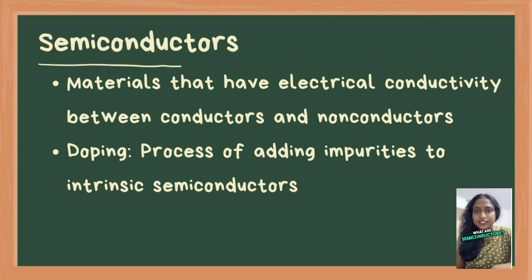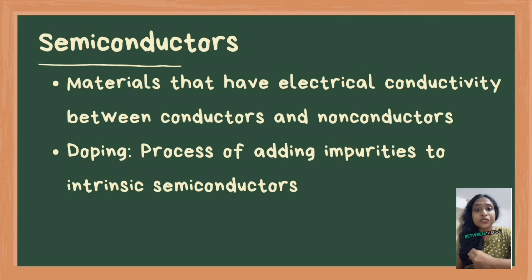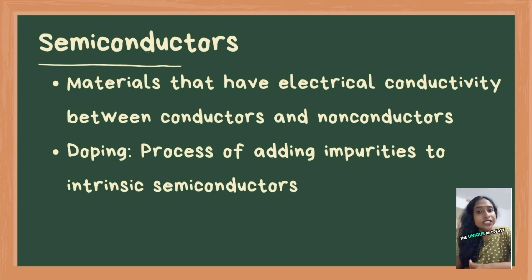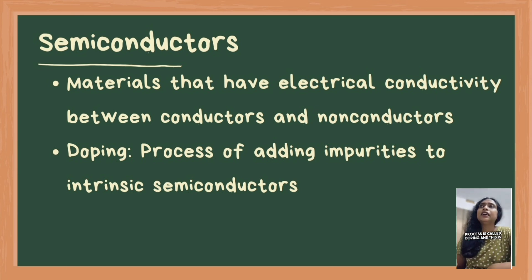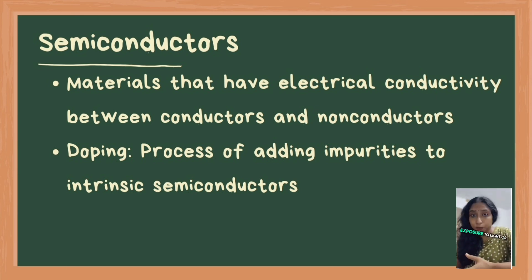What are semiconductors? Semiconductors are materials that have a conductivity between that of conductors like metals and insulators like ceramics. The unique property of semiconductors is that their ability to conduct electricity can be manipulated by the introduction of impurities, and this process is called doping — by applying an electric field, by exposure to light, or by temperature changes.